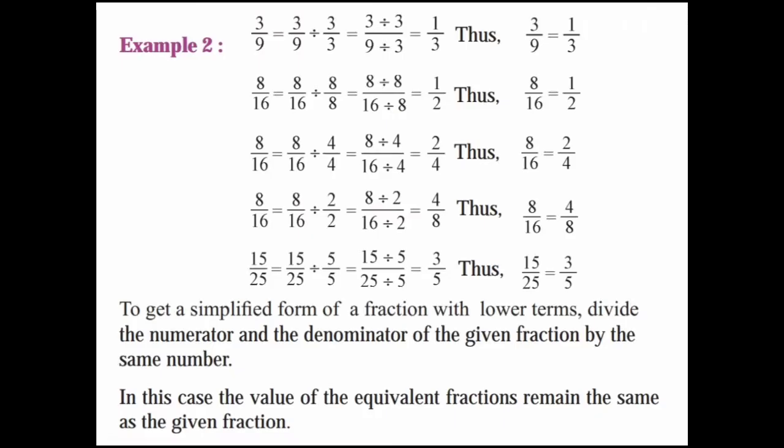Example 2: 3/9 = (3÷3)/(9÷3) — 3 ones are 3, 3 threes are 9 — so that equals 1/3. For 8/16: divide by 8 — (8÷8)/(16÷8) — 8 ones are 8, 8 twos are 16 — that equals 1/2.